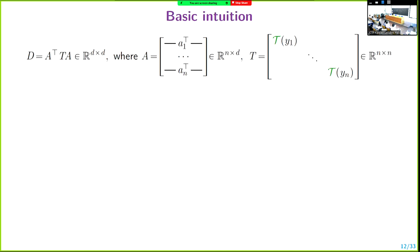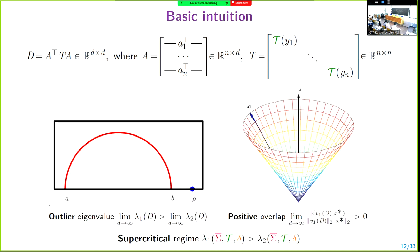Let's get some basic intuition. The matrix D, written in matrix form, is A-transpose times T times A — a D by D matrix, where T is a diagonal matrix putting T(Y_i) on the diagonal. You would expect that in the presence of a spectral gap, the first eigenvalue would be detached from the bulk. The empirical spectral distribution of D is the histogram of the eigenvalues of D. Whenever there is an outlier, you'd expect the top eigenvector to be non-trivially correlated with x star.